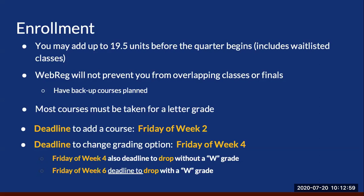Some important deadlines to remember: Friday of Week 2 is the last day to add a course. Friday of Week 4 is the deadline to change grading option — meaning changing between pass-no-pass and letter grade — and also the deadline to drop without a W grade. Friday of Week 6 is the deadline to withdraw from a course with a W. We will go into more depth on GE requirements, enrollment, waitlists, and grades in the GE Deep Dive webinar on August 5th.